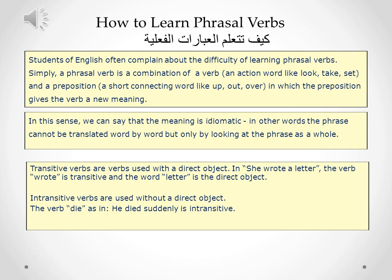In this new video lesson, I'm going to show you how to learn phrasal verbs and how to learn the most common phrasal verbs used in English. First of all, students of English often complain about the difficulty of learning phrasal verbs. Simply, a phrasal verb is a combination of a verb — an action word like look, take, set — and a preposition, which is a short connecting word like up, out, over, in which the preposition gives the verb a new meaning.